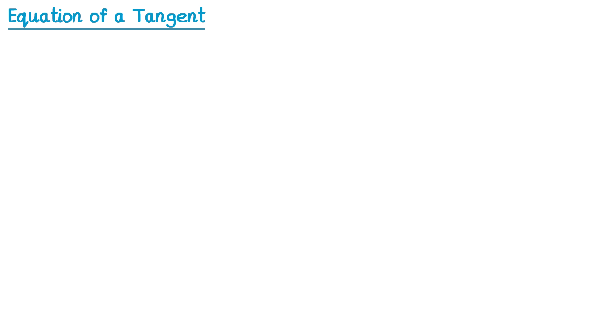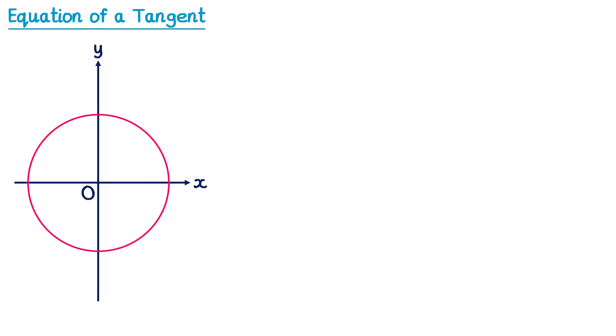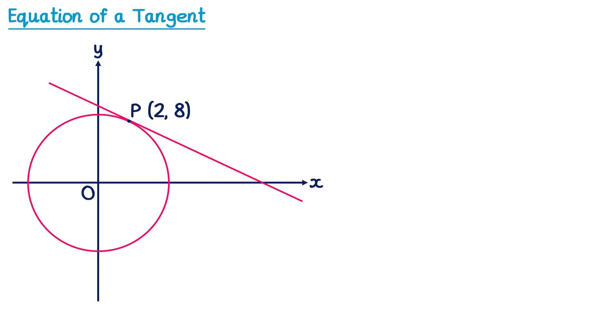Let's start by taking a circle that's centred at the origin, and we're going to mark a point P on that circle. For this example it's coordinate (2, 8), and we're going to draw a tangent to the circle at that point P. The point of this video is to try and find the equation of that tangent. The first step in this process is to draw a line from O, the origin, up to P.